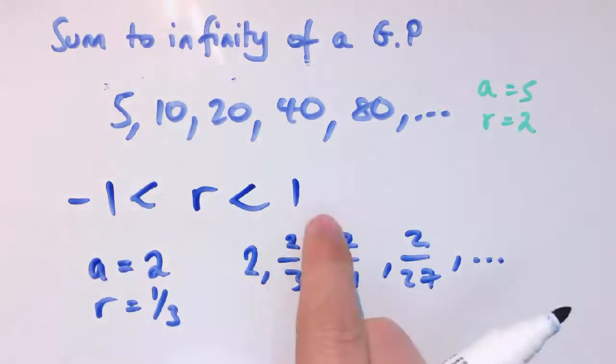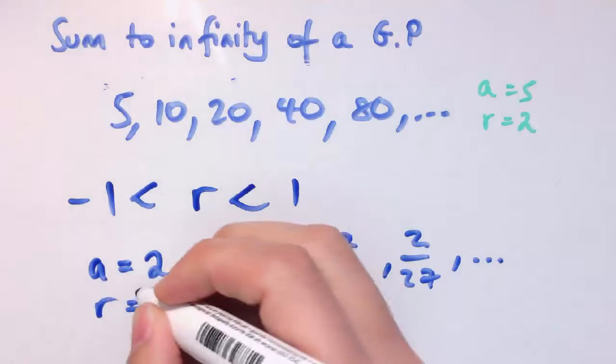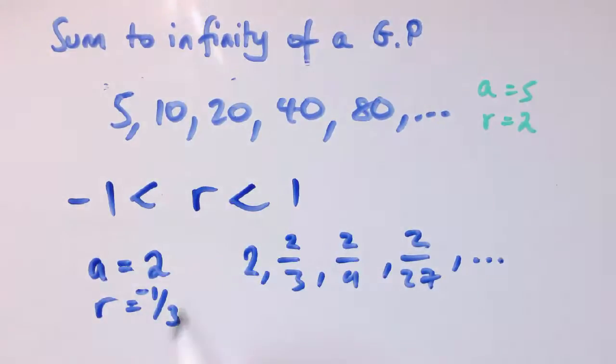Notice that it's minus 1 to 1, so we've also got to think about the case, what about when r is negative? If r is minus 1 third, that means that this sequence goes 2, and then I times it by minus 1 thirds, it becomes minus 2 thirds, then plus 2 ninths, then minus 2 27ths. So they're alternating in sign, but they're still getting smaller and smaller in size, and again, that will mean that the sequence converges.